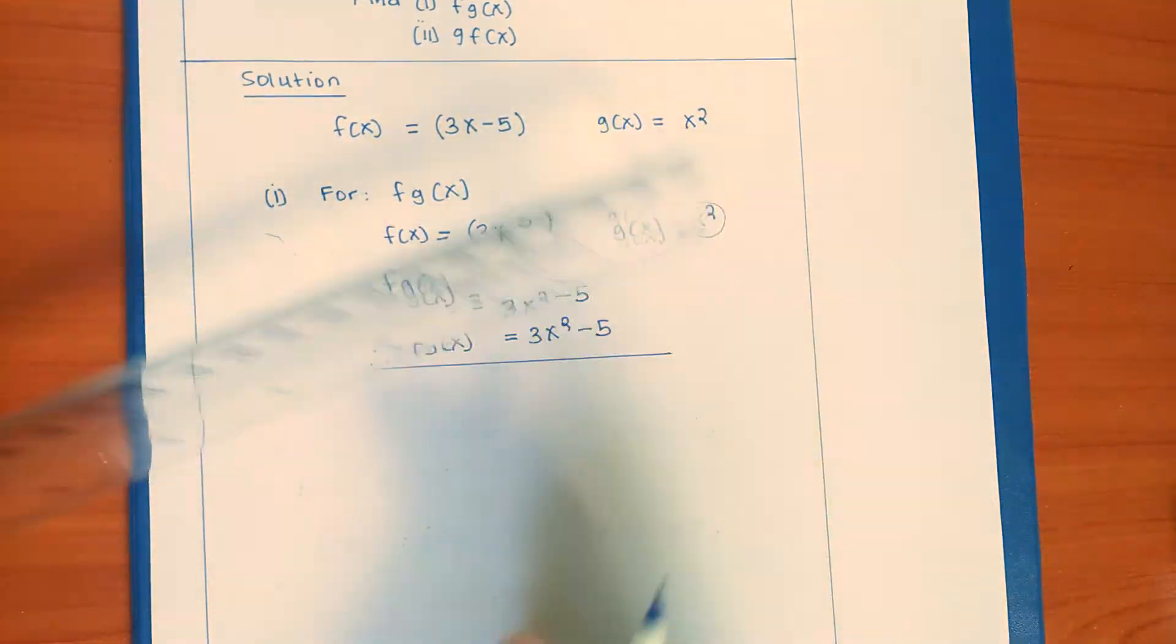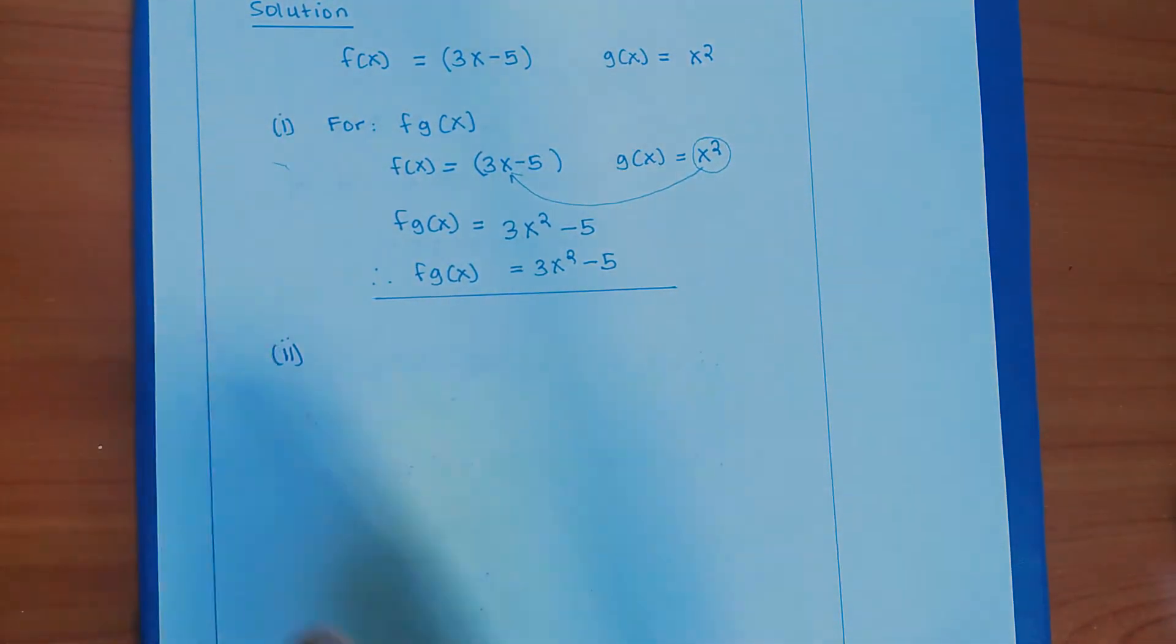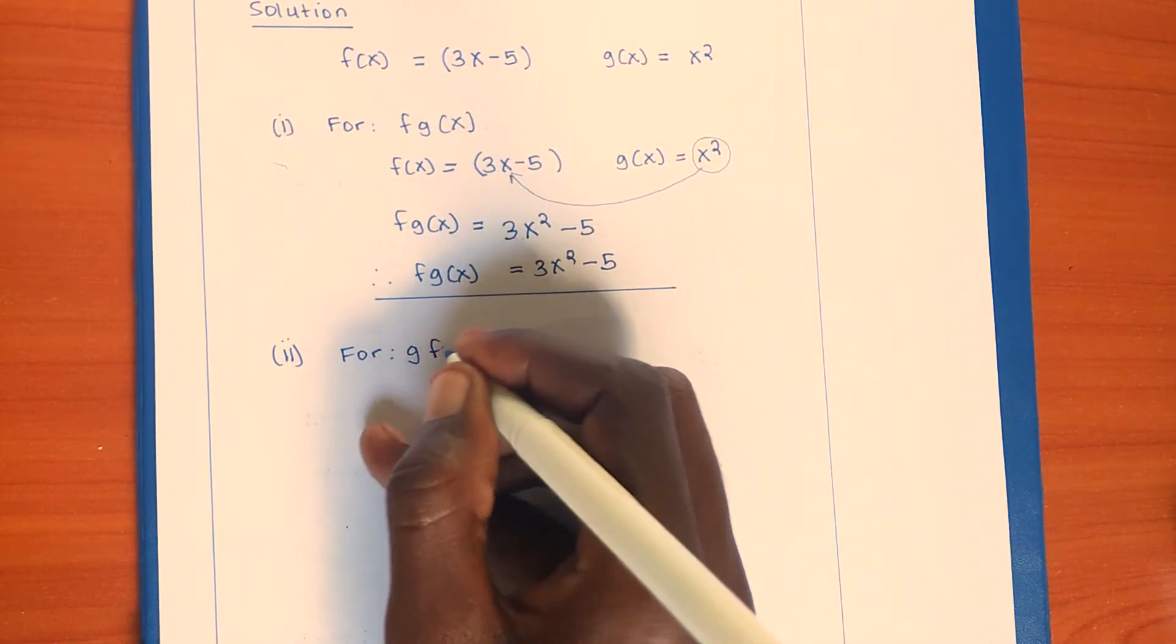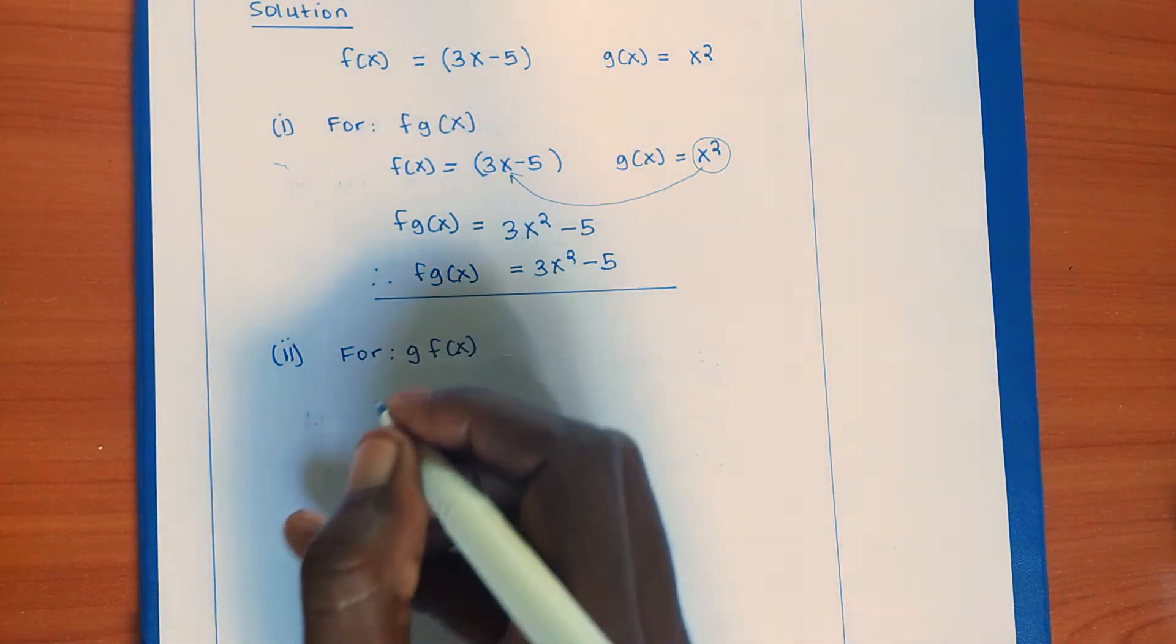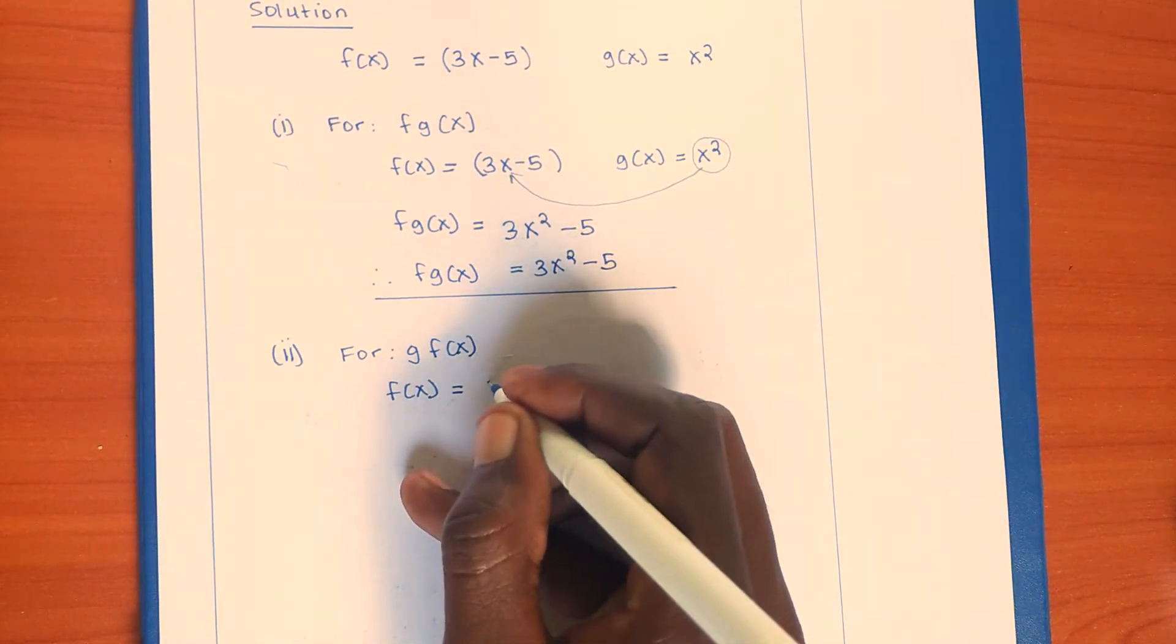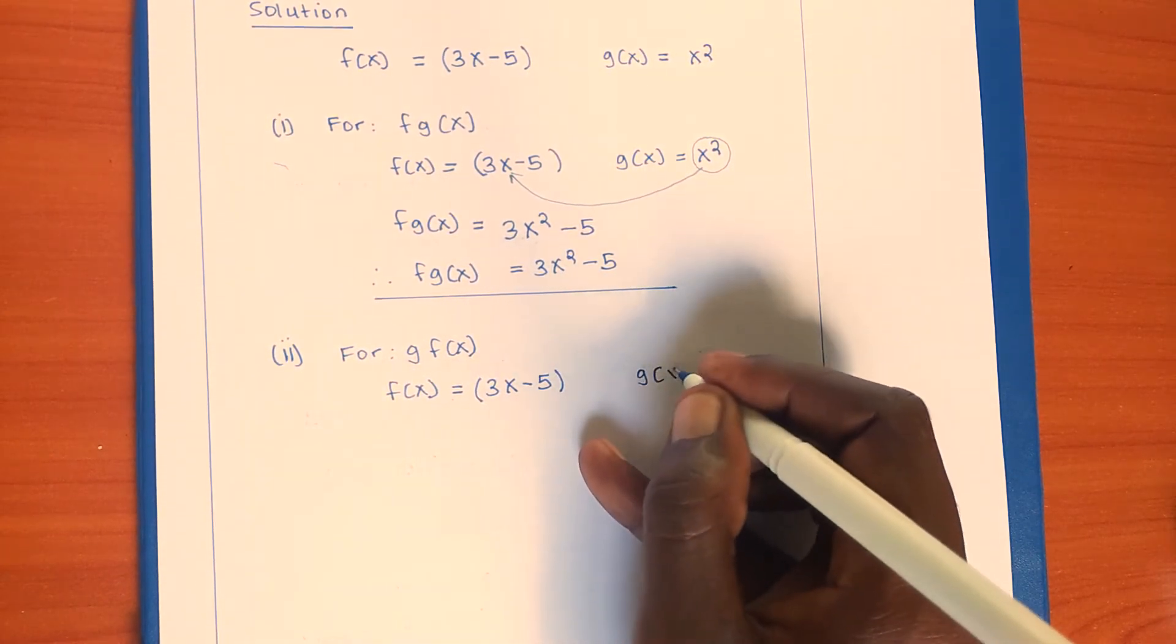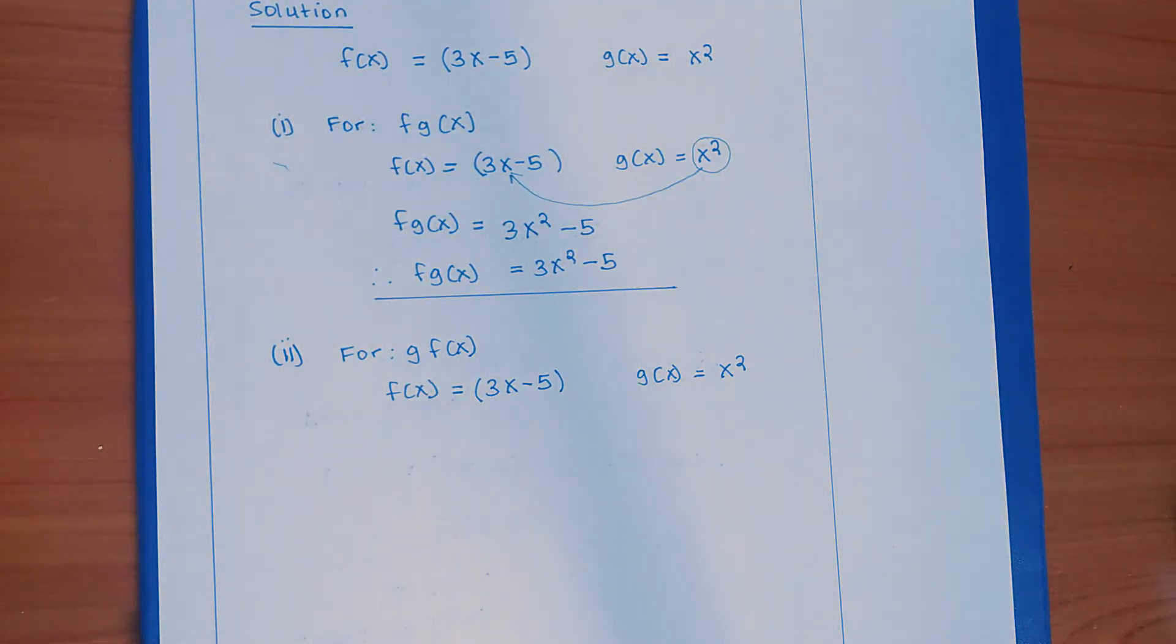Next, part 2: For gf(x), let's see what will happen. f(x) is equal to 3x - 5, g(x) is equal to x². So this time...